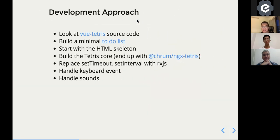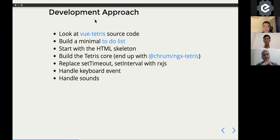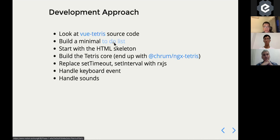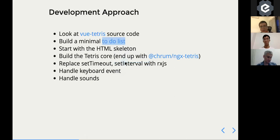Because a Vue.js Tetris already existed, the approach was simpler — I didn't have to design the game or write all the HTML and CSS from scratch. I first looked at the Vue.js source code and then wrote a simple to-do list to keep track of tasks since I was working alone. It's not a proper Kanban board, just something simple to know where I am and when things will be ready for publishing.